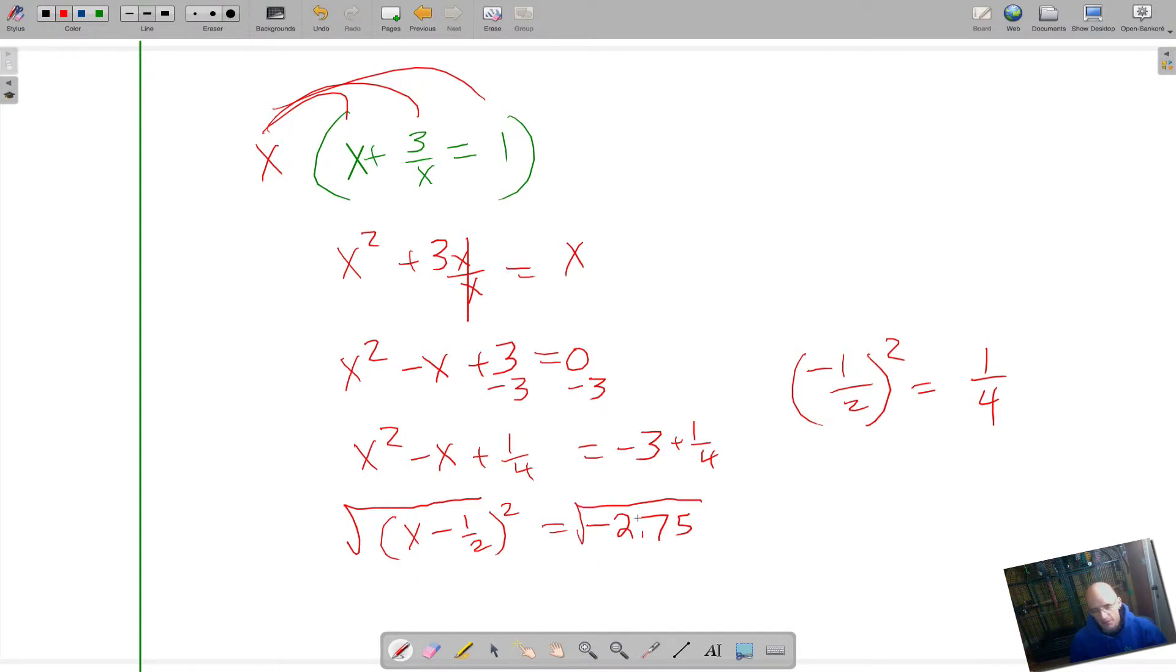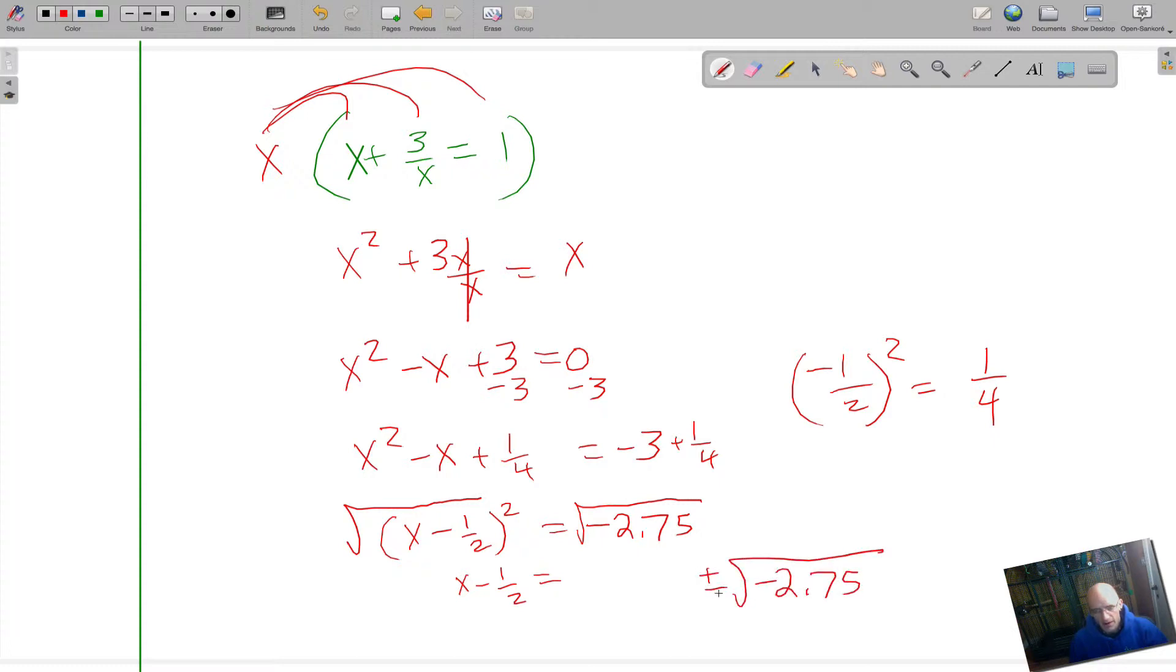And so we see that we're going to actually have an imaginary answer here. Because we got a negative square root but we'll finish it up anyway. So it's x minus 1 half equals plus or minus the square root of negative 2.75. Add 1 half. So x equals 1 half plus or minus the square root of negative 2.75. Good enough answer but again, clear the fractions.